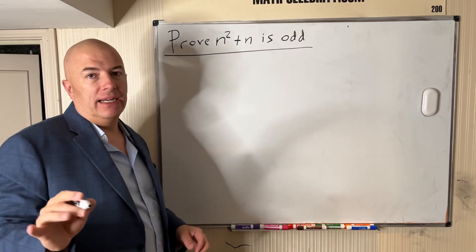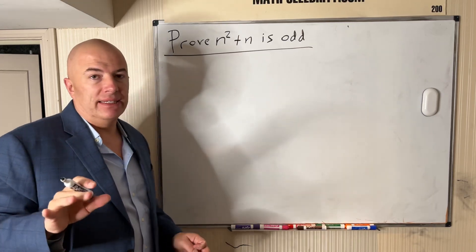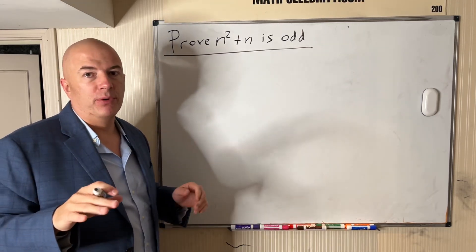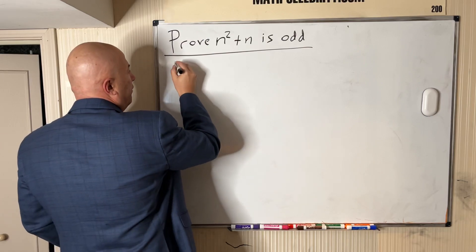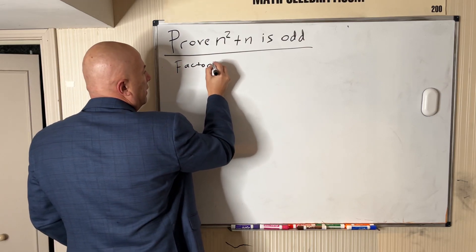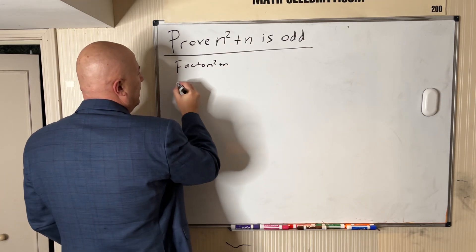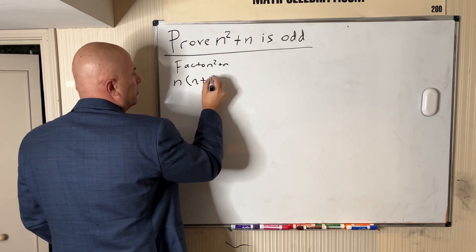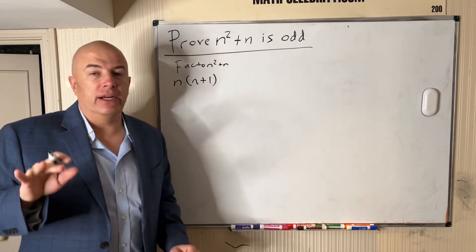The first step to this before doing two-column proofs is factoring. If we factor n squared plus n, we get n times n plus one.